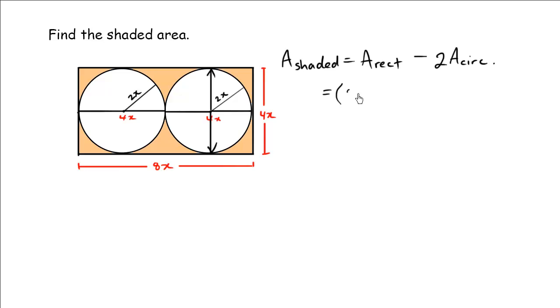So the area of the rectangle is equal to 8x times 4x, that's the length and the width, minus two times area of a circle. Recall the formula πr². So 8 times 4 is 32, x times x is x², minus 2π...